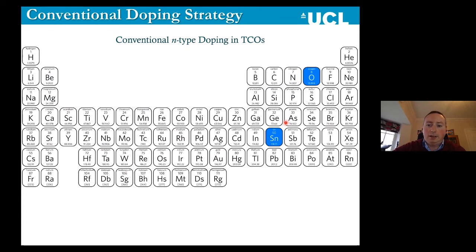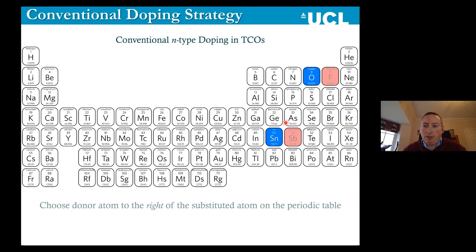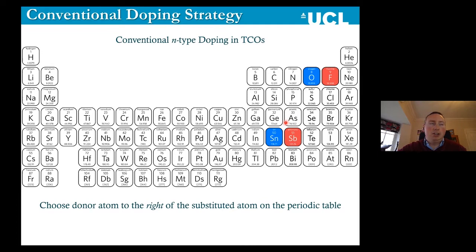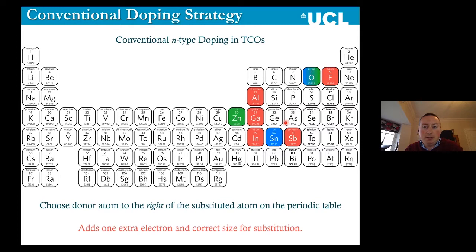When choosing a dopant for a TCO, typically what would happen is if you're trying to dope, say, tin dioxide — I've highlighted tin and oxygen in the periodic table — you would go one to the right. So if you were going to find a donor dopant for oxygen, you'd dope with fluorine, or if you're trying to dope on the tin 4+ site, you'd use antimony 5+. Similarly for zinc oxide, you'd go one to the right for aluminium, gallium, or indium, or on the oxygen site, one to the right for fluorine. This is what we've conventionally done for generations — but is this actually the right approach?